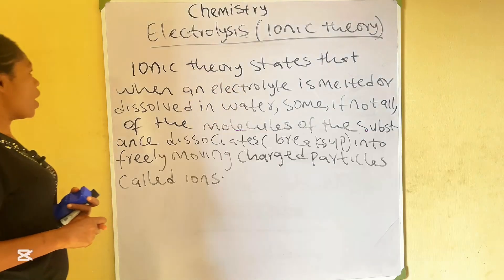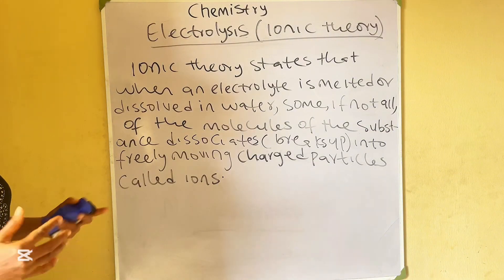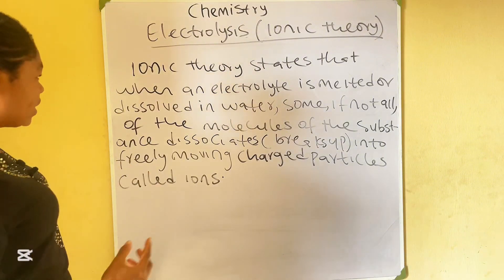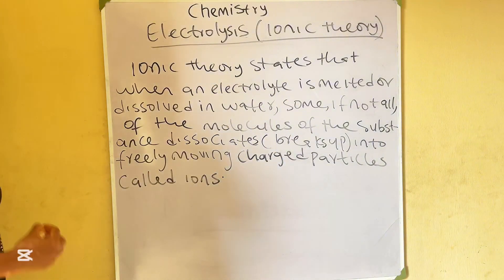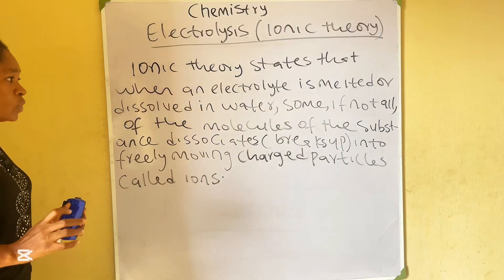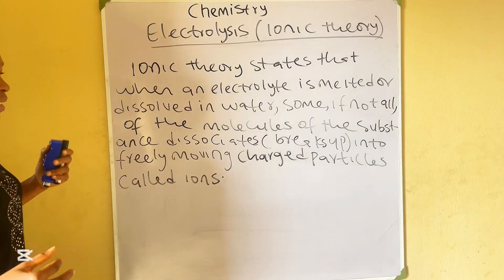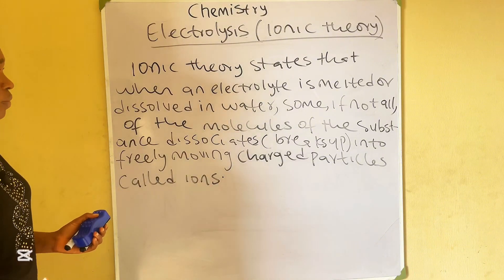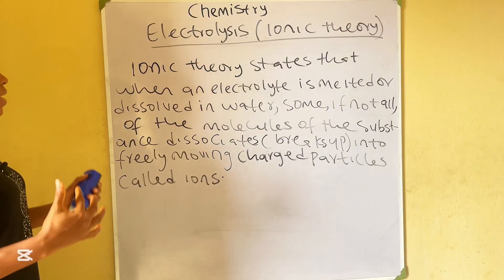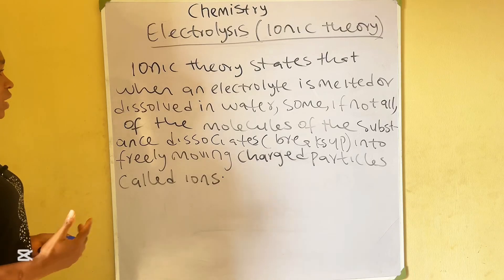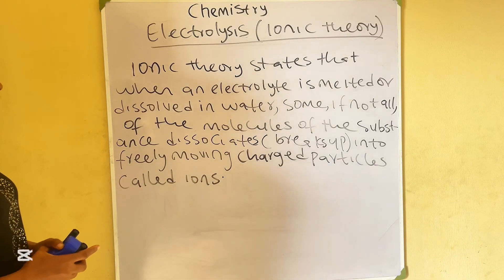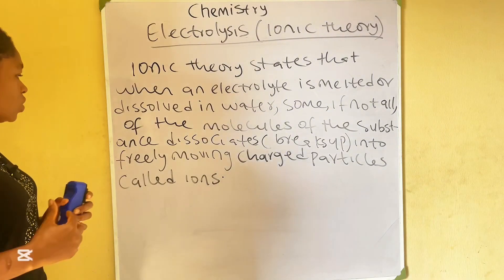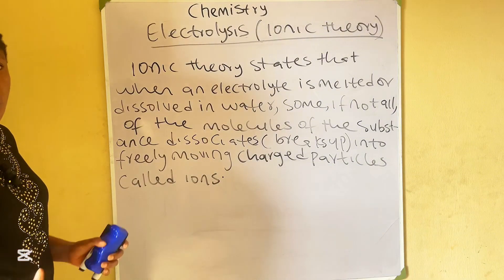Let's look at Ionic Theory. Ionic Theory, as proposed by Arrhenius in 1887, says that when an electrolyte is melted or dissolved in water, some, if not all, of the molecules of the substance dissociate into free-moving charged particles called ions. In short, when an electrolyte is melted or dissolved in water, some, if not all, of the molecules dissociate into ions. The process of dissociation into ions is what we call ionization.